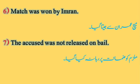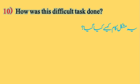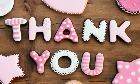Translating the passive voice sentences: 'Match was won by Imran' — match Imran se jeeta gaya. 'The accused was not released on bail' — mulzim ko zamanat par raha na kiya gaya. 'Were all books burnt?' — kya tamam kitaabein jala di gayin? 'Who was killed by the police?' — police ke haatho kaun mara gaya? 'How was this difficult task done?' This was Past Indefinite Tense that we practiced today.